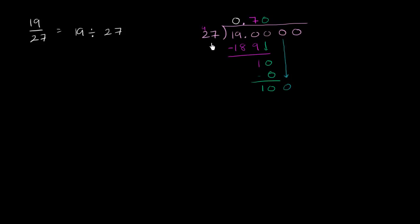So now 27 goes into 100 three times. 3 times 27 is 60, plus 21 is 81. 3 times 7, yep, 21, yeah, 81.